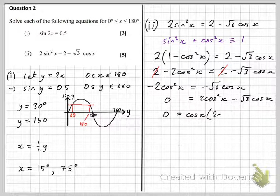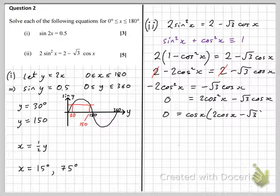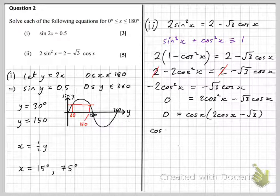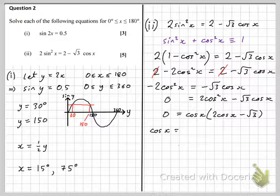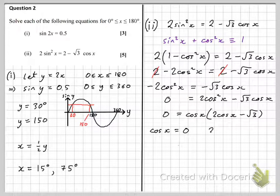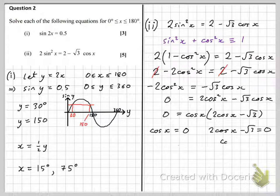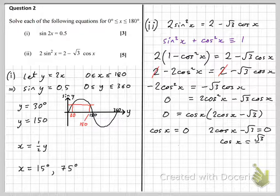So take cos x out as a factor. That's then a zero product, so either the left factor, cos x, equals 0, or the right factor, 2 cos x subtract root 3, equals 0, which rearranges to cos x equals root 3 over 2.